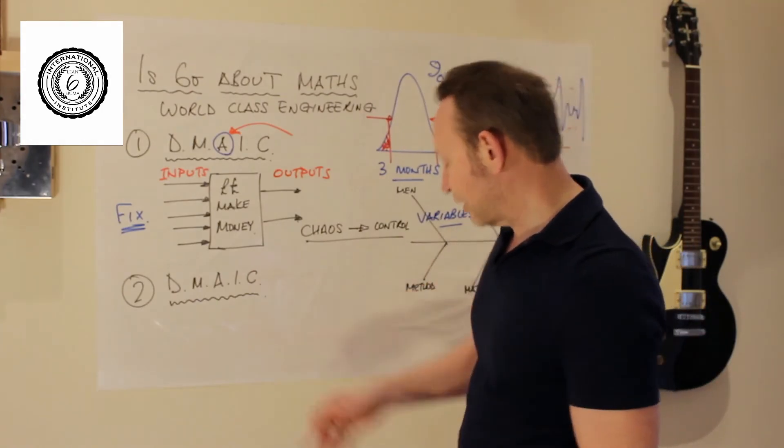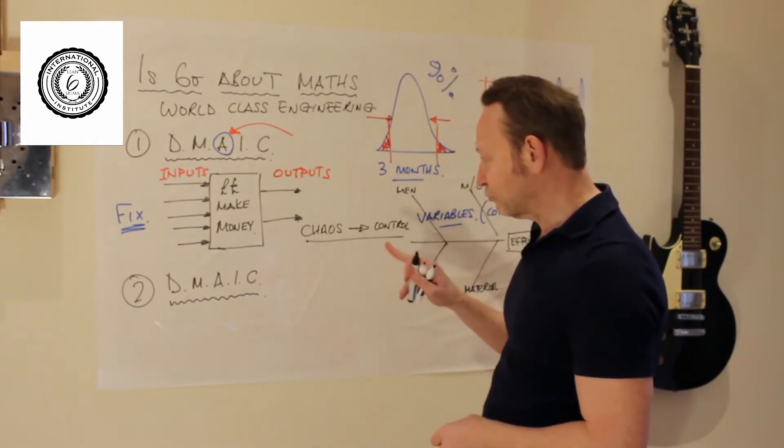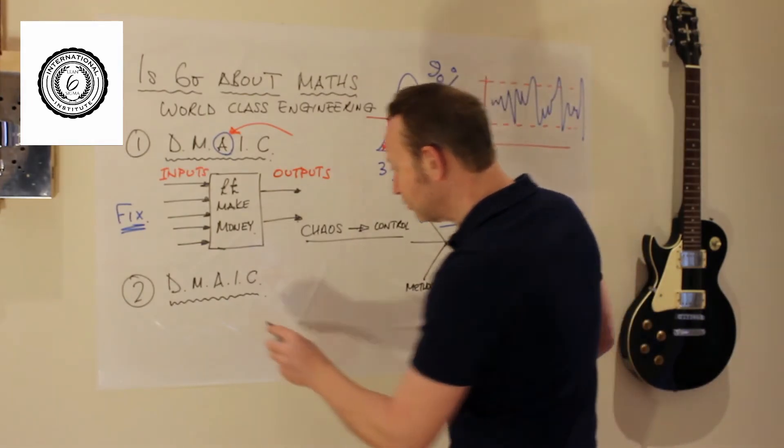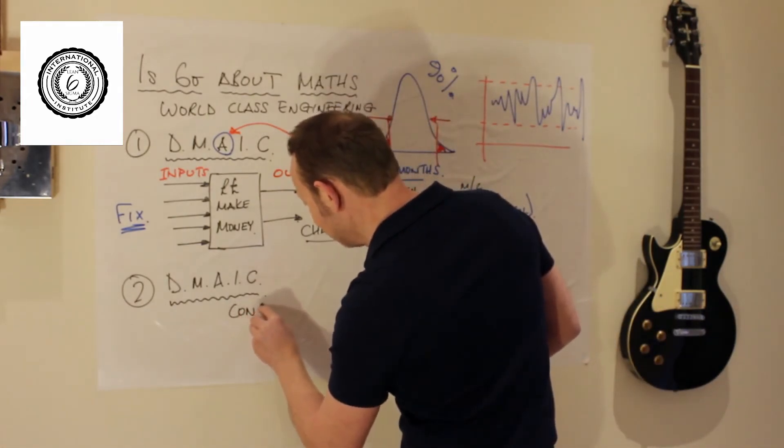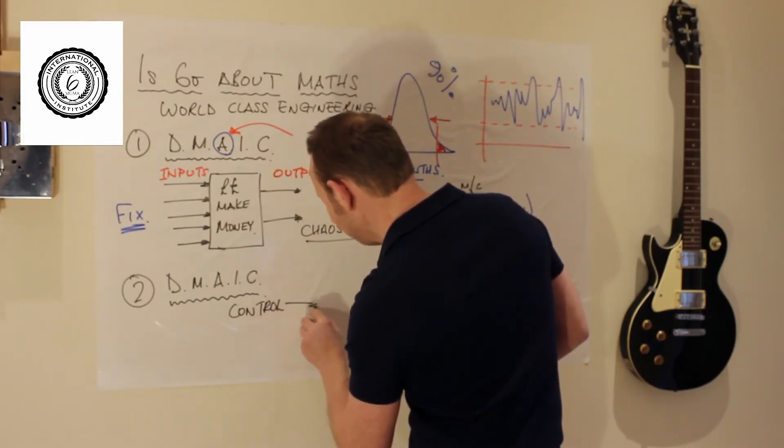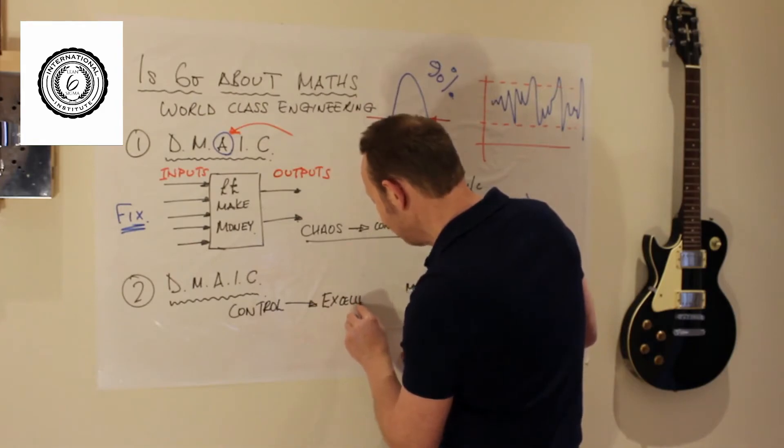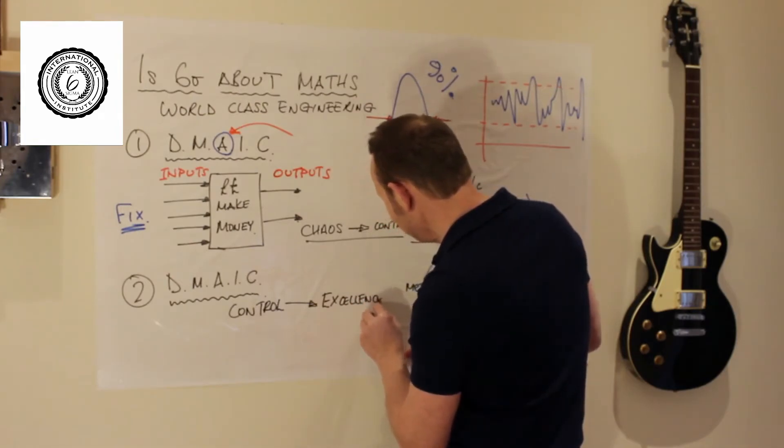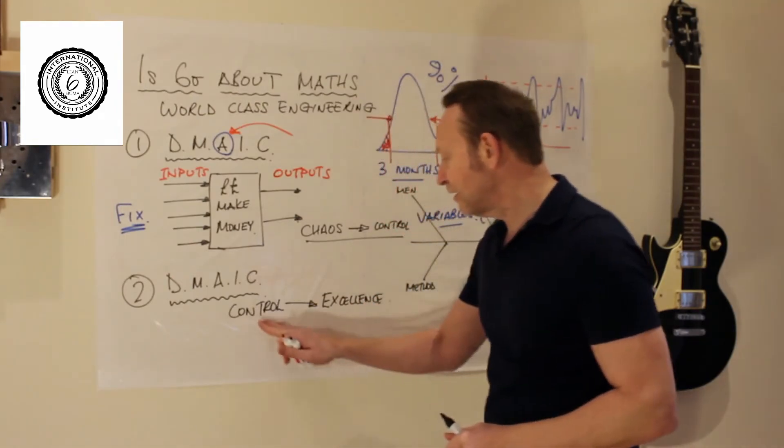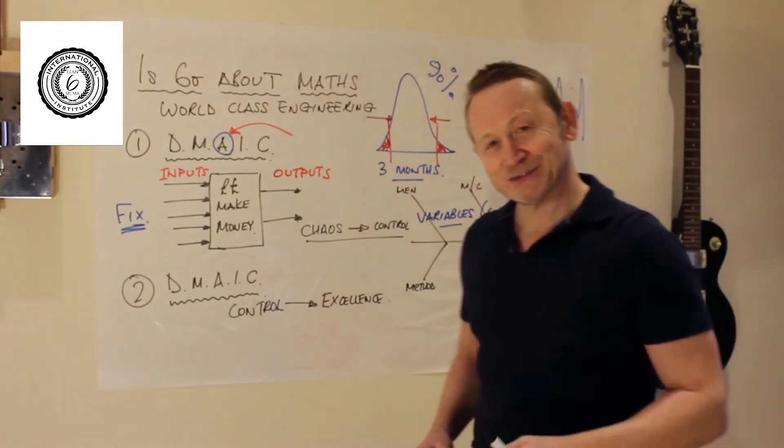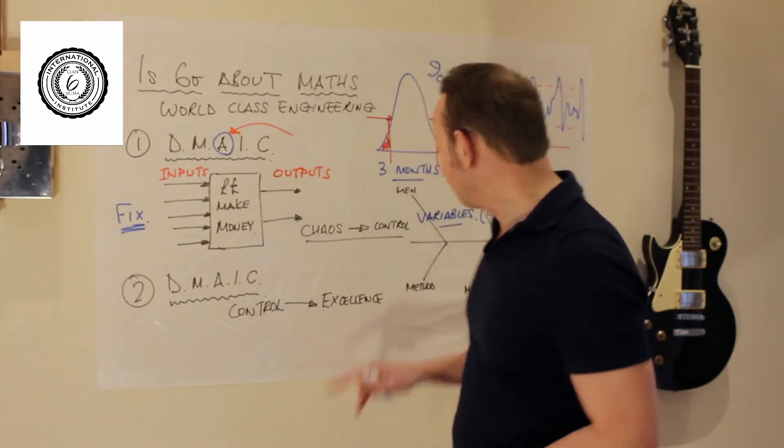So let's take a look at this thing. This thing is not about chaos to control. This thing is about control to excellence. So this is domain two. Control to excellence. Just occasionally, I do get projects that go straight to this level, but it's very rare.